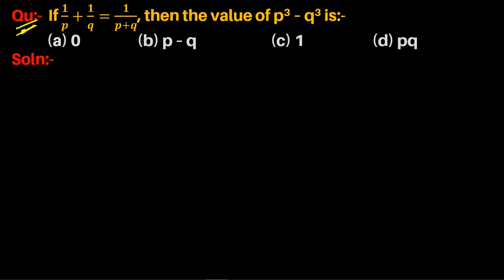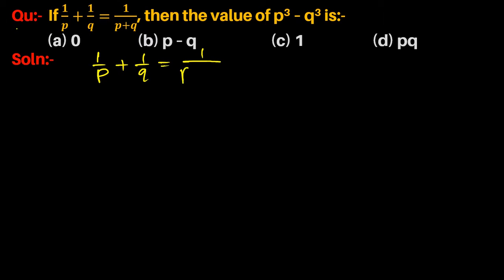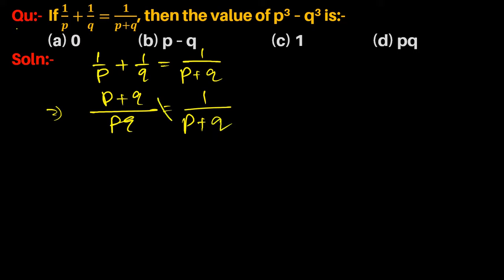The question is: if 1/p + 1/q = 1/(p+q), then find the value of p³ - q³. Given that 1/p + 1/q = 1/(p+q), we first take the LCM of p and q, giving (p+q)/(pq) = 1/(p+q), and after cross multiplication we get a key equation.